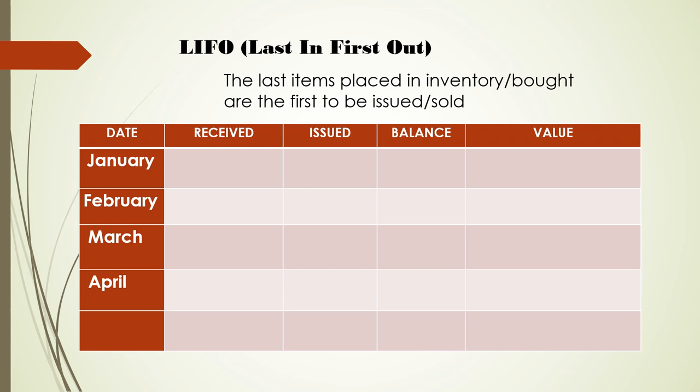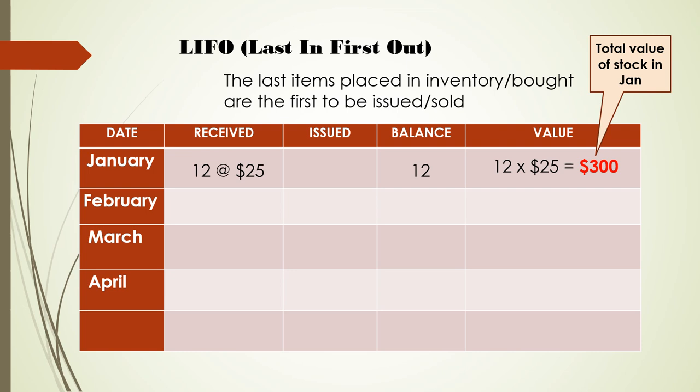For ease of understanding, we are going to use the same example that we used when we looked at the FIFO method, which was the first in first out method. So in January, 12 reams of paper were received at $25 and none were issued. Our balance is therefore 12 reams of paper. 12 multiplied by 25 gives us a total stock value as at January of $300.